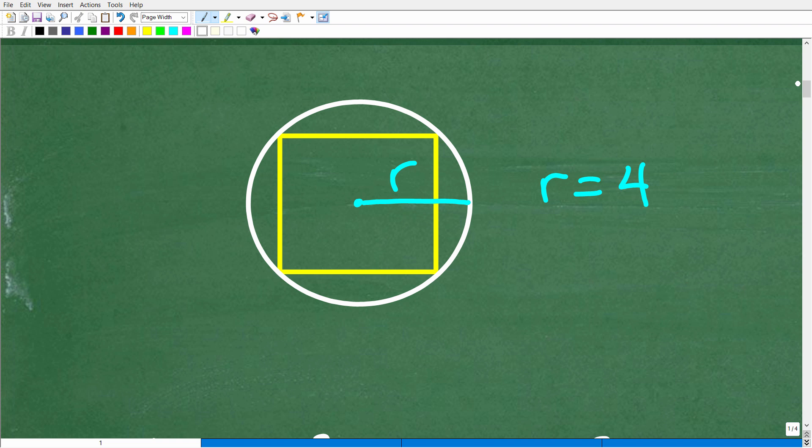Here is effectively the problem. So we have this square inscribed inside of this circle. That means that the corners of the square are touching the circle. Now, what do we know about squares? We know that the sides are equal, right? So when you have a square, each side is equal to the other, and the angles are 90 degrees. So by definition, this is a square.